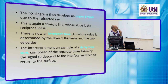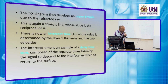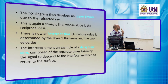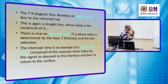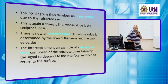The TX diagram develops a new branch due to the refracted ray. This is again a straight line whose slope is the reciprocal of V2. There is now an intercept time whose value is determined by the layer 1 thickness and the two velocities.